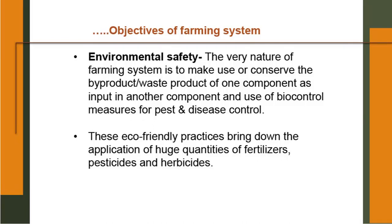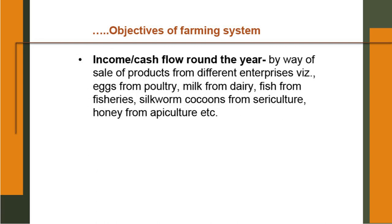Environmental safety: the very nature of farming system is to make use of and conserve the by-product and waste product of one component as input in another component, and use of biocontrol measures. These eco-friendly practices bring down the application of large quantities of chemical fertilizers, pesticides and herbicides that are very dangerous for the soil, human health and the environment. Income or cash flow round the year: you have many enterprises, so at a particular point in time you may get some income, and during other months you may get income from other enterprises — that way you can get income round the year, and employment generation is also very important.